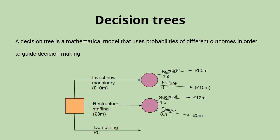This is what a typical decision tree might look like. We start with the decision at the square, and we can either choose to invest in new machinery, which costs us ten million pounds, or we could decide to restructure our staffing at a cost of three million pounds. We might also add a do nothing option as well, because if all of the possible choices generate a loss for us, then it might be better to do nothing.